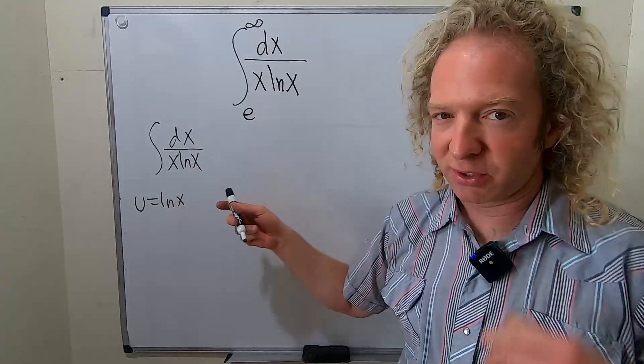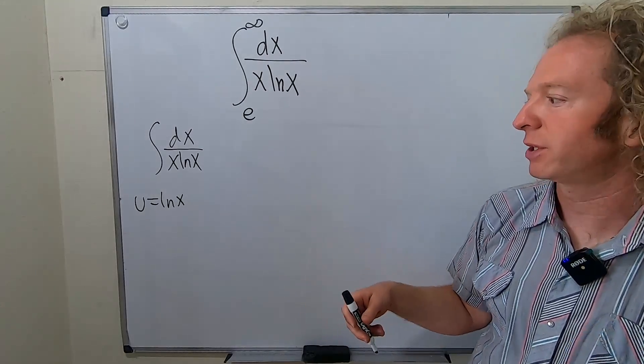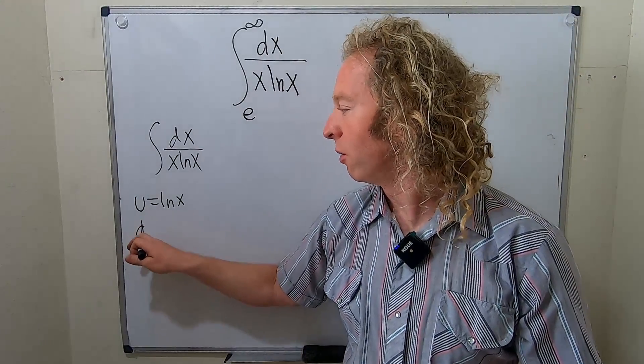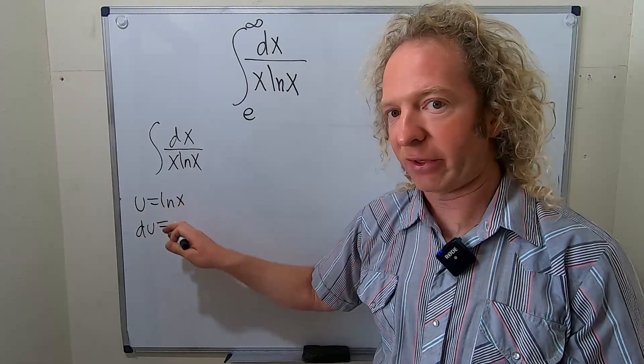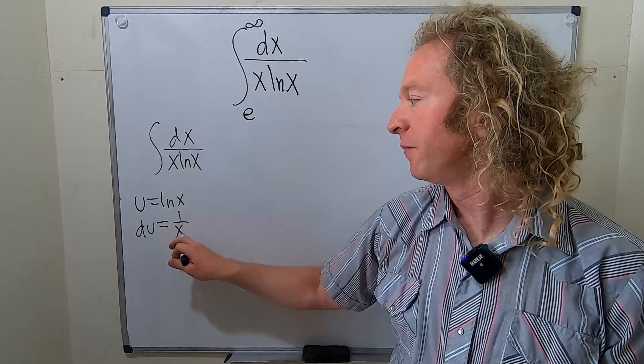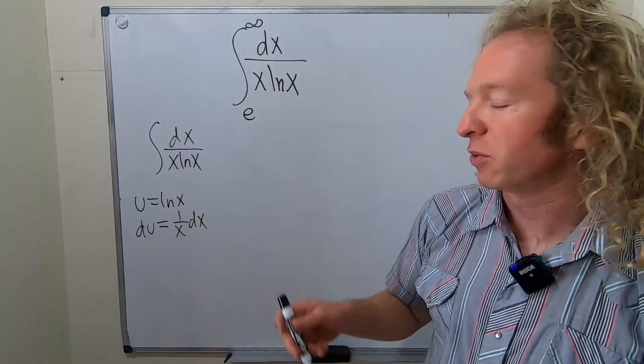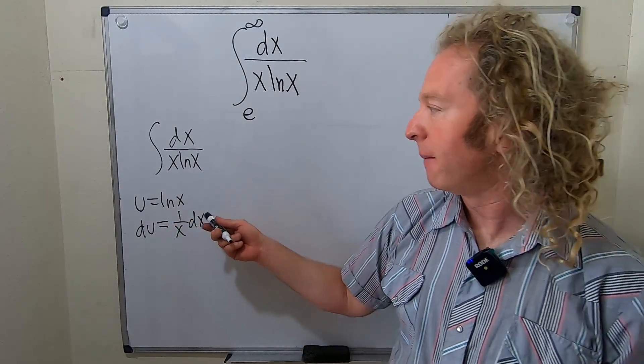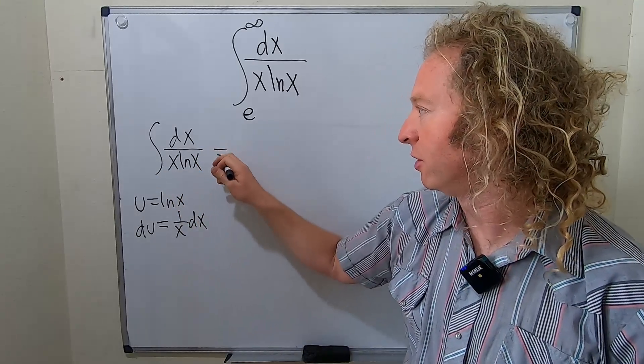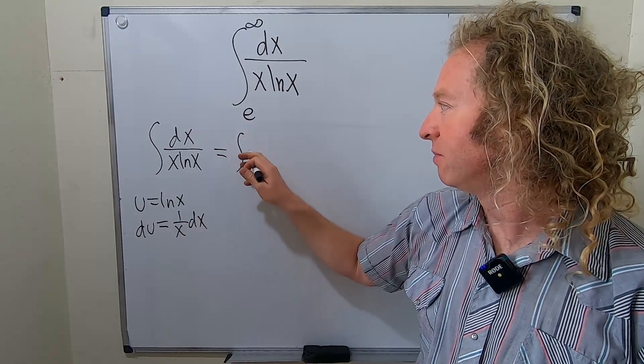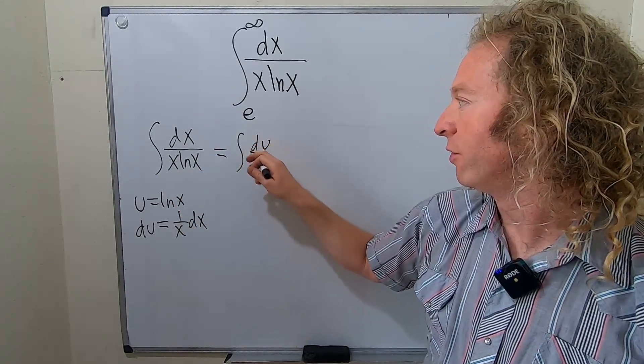And the reason I know to do that is because you have to have some foresight. Now you know that the derivative of ln x is 1 over x dx. And so what that does is that fits what's in the integrand, because now you can write this as simply du over u.